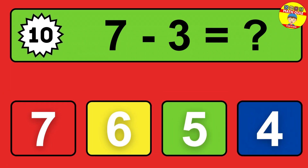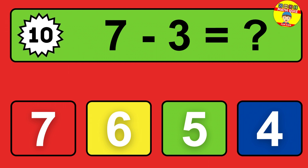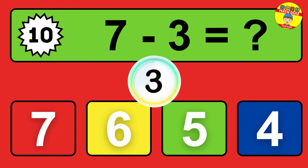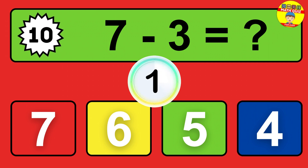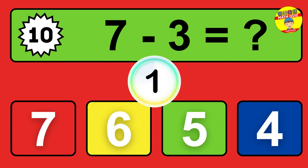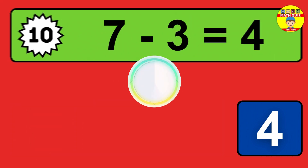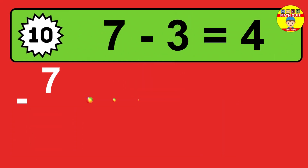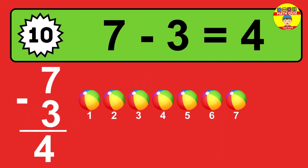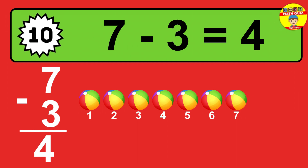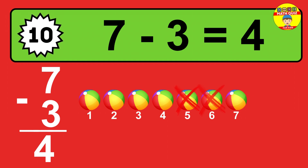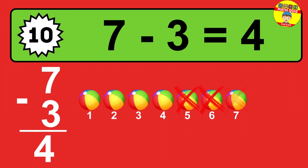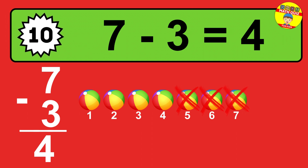Question 10. 7 minus 3 equals what? So the answer is 7 minus 3 is 4. Let's count it. 1, 2, 3, 4.